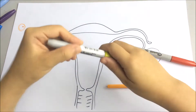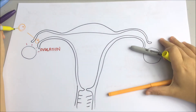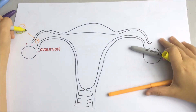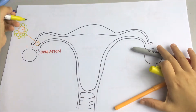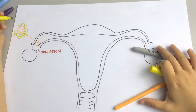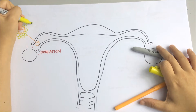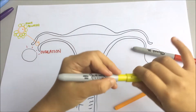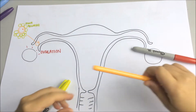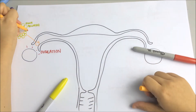This is the egg cell. There are surrounding cells around the egg cell known as corona radiata, and there is also a protective layer known as zona pellucida.